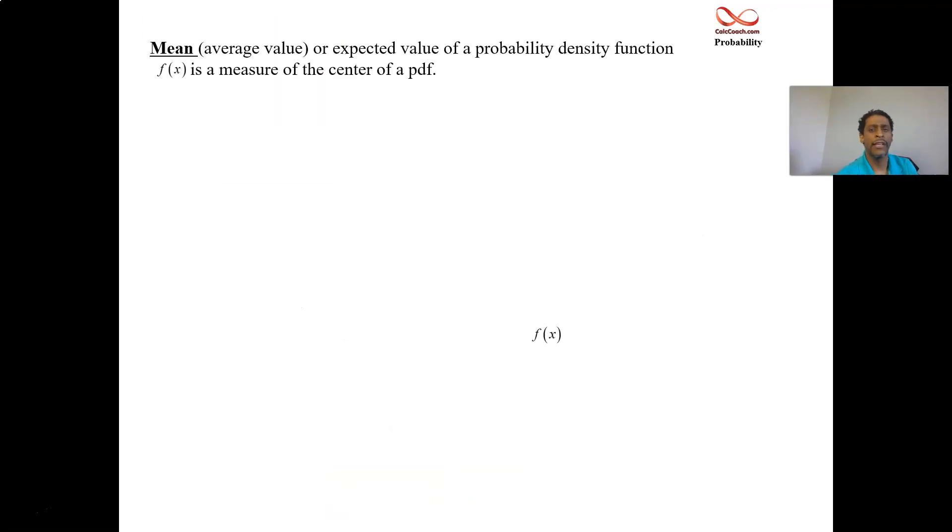First up, calculating the mean. The average value, the expected value, all these are synonyms for the mean. The Greek symbol for the mean is the letter mu. And it's found by integrating. And you integrate over the entire real line, x times your function. The function measures probability.